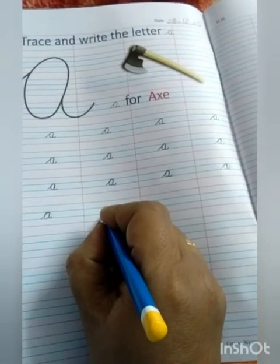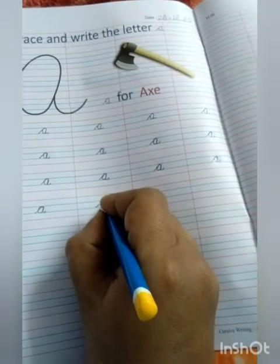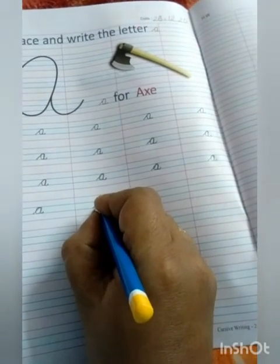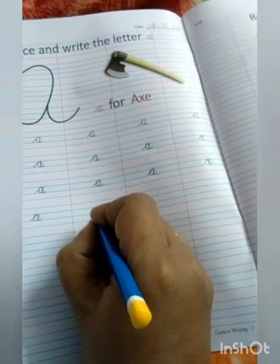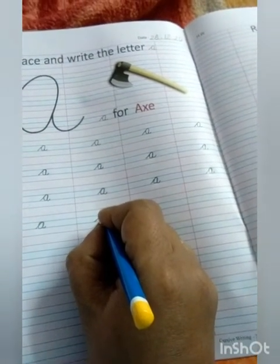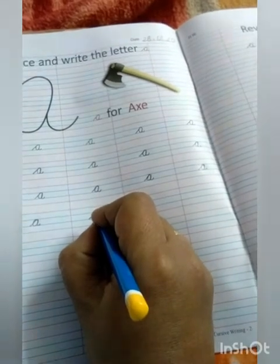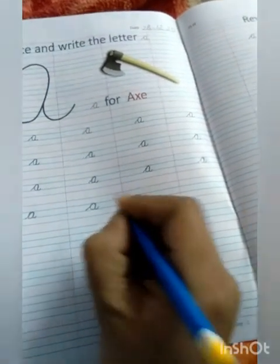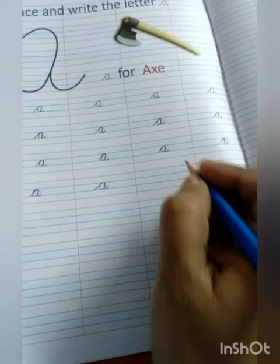Start from third line. Slanting line. Make a curve. Move back. Up. Join. And come back. And make a tail. Okay.